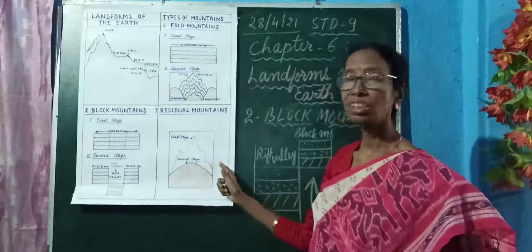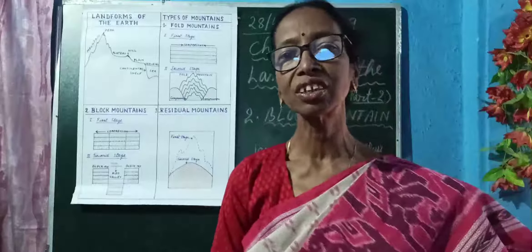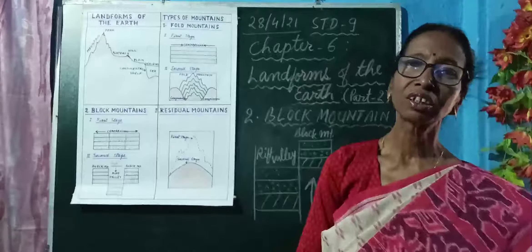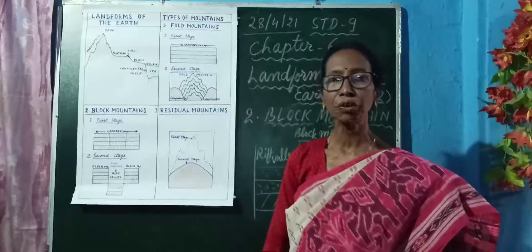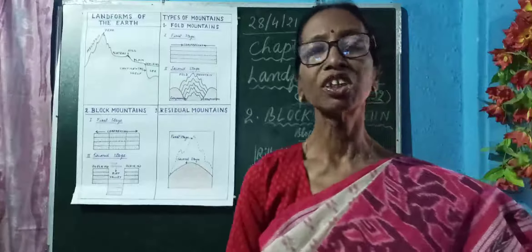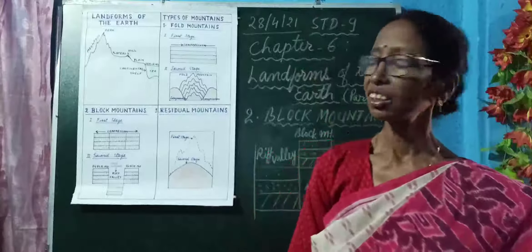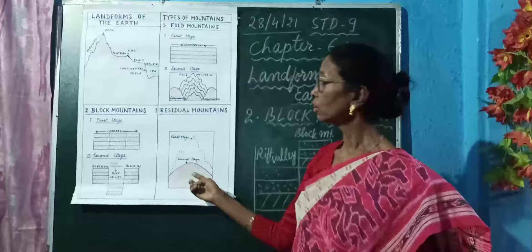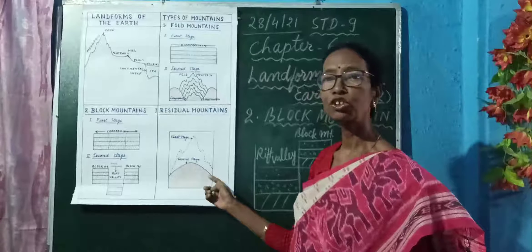High mountains are changed into lower mountains due to the agents of gradation. In areas where there is heavy rainfall, water or river water is the main agent. In ice-cap regions, the main agent is glacier, and in desert regions, the main agent is wind. These agents are able to change a high mountain into a low-lying mountain with a dome-shaped top and gentle slope.